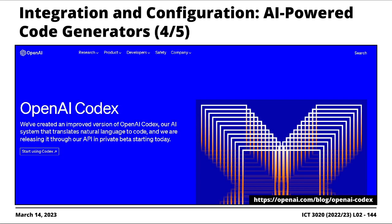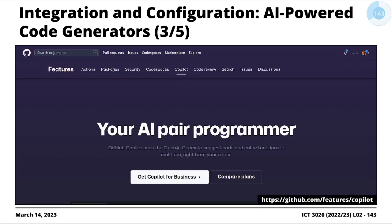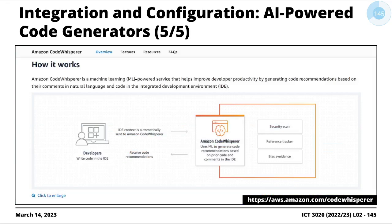OpenAI is also seriously working on this product offering called Codex, similar to GitHub Copilot. And I just discovered, actually when I was preparing these slides, I was not aware that Amazon as well was working on so-called CodeWhisperer. I haven't really played around with CodeWhisperer. I have played around with GitHub Copilot.